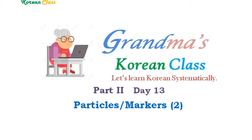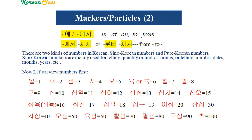As I mentioned in the last session, in Korean, word order is not that important because the marker attached to a noun indicates the noun's function in the sentence. So as long as correct markers are used, the word order can be in various ways. However, these markers are often omitted in casual conversations if they are understood.